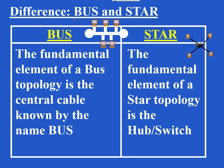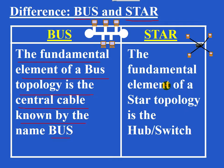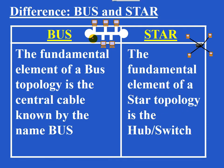What are the differences between BUS topology and star topology? The fundamental element of a BUS topology is the central cable known as the BUS. The fundamental element of a star topology is the central device known as the SWITCH. This is the backbone of BUS topology, and this is the backbone of star topology.